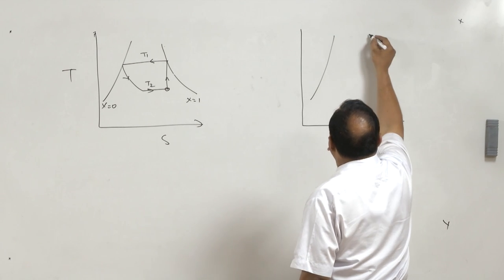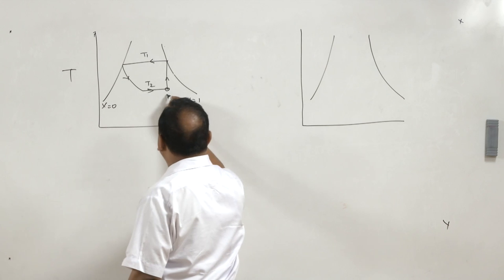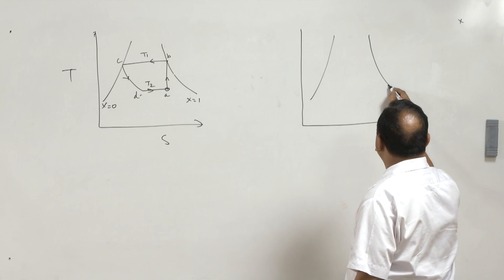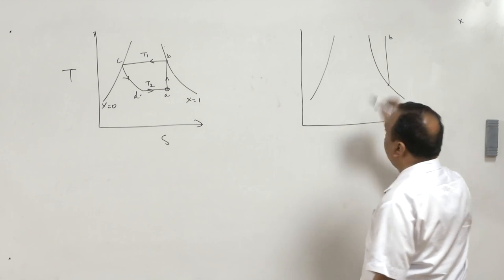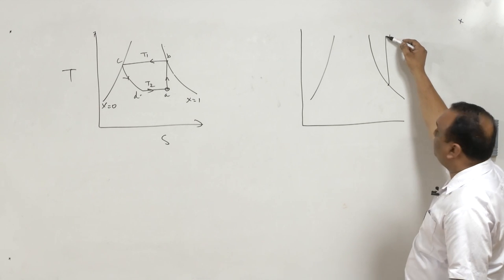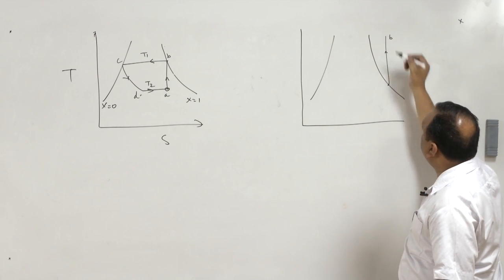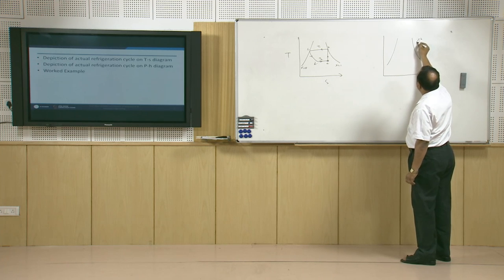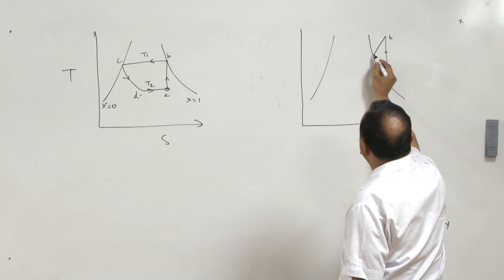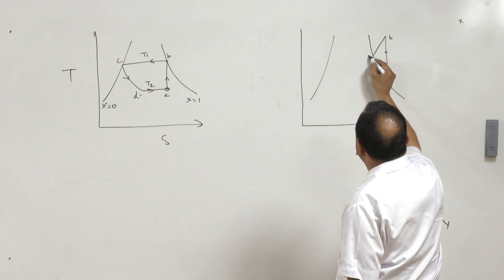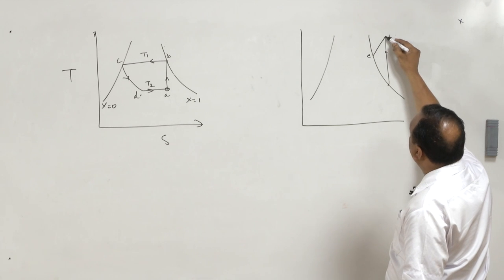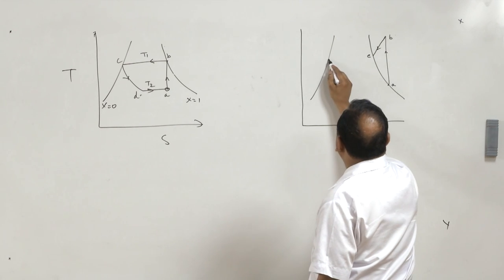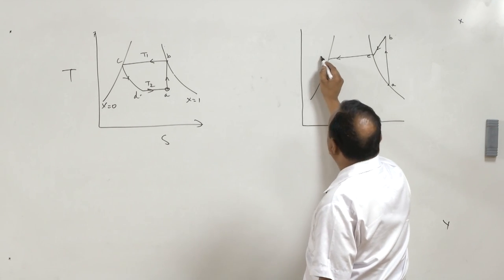Consider states A, B, C, D on the T-s diagram. State A will be shifted so that when compression takes place from A to B, the vapor will become superheated after compression. This superheated vapor emerging from the compressor will first be desuperheated in the condenser, where temperature at B is greater than temperature at E. After desuperheating, condensation of vapor takes place inside the condenser and we attain state C.